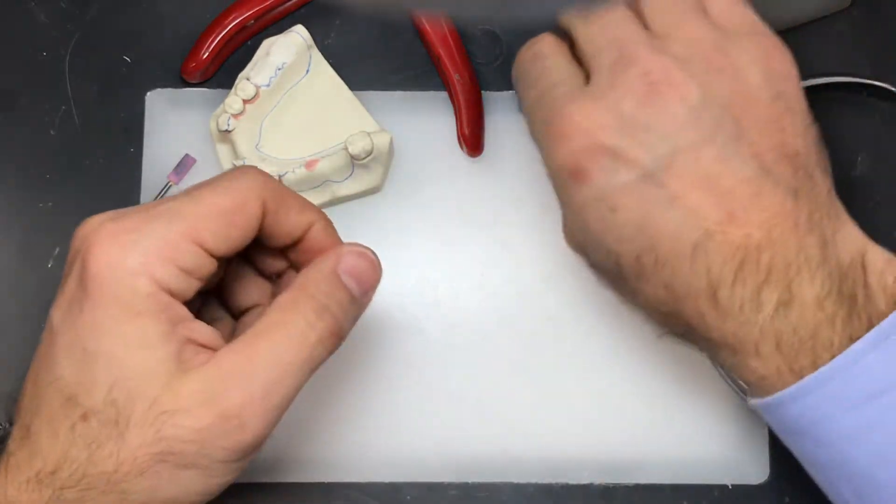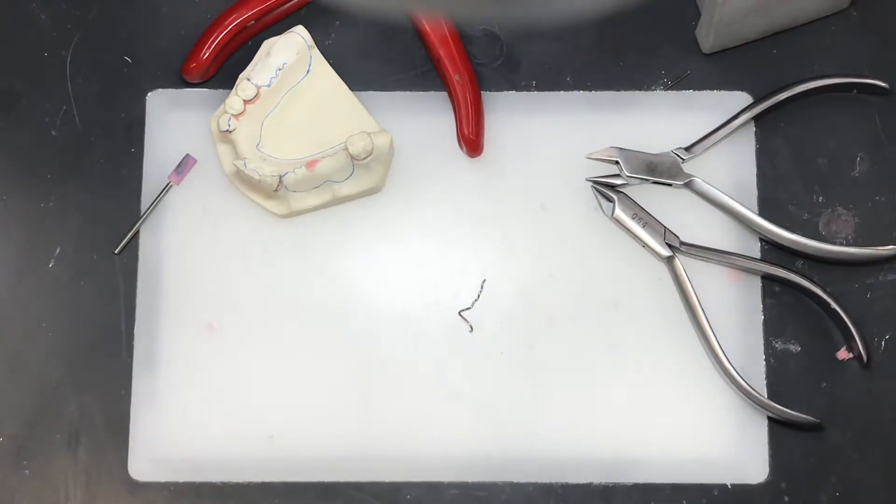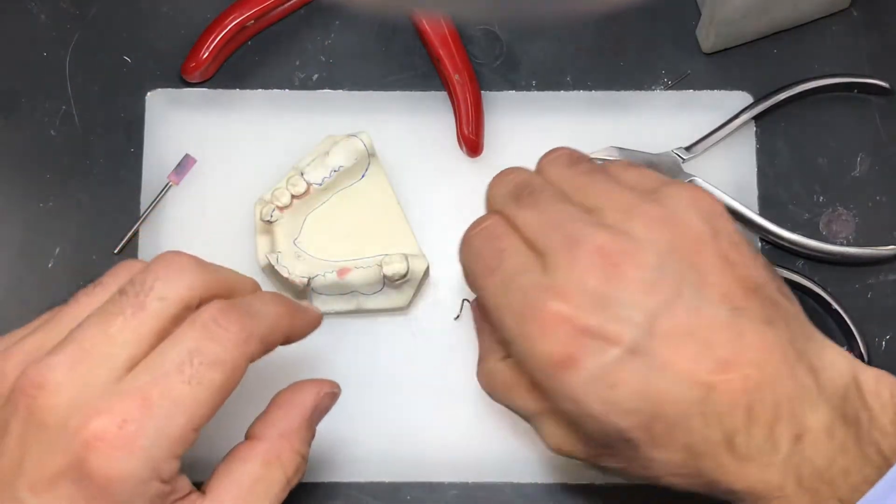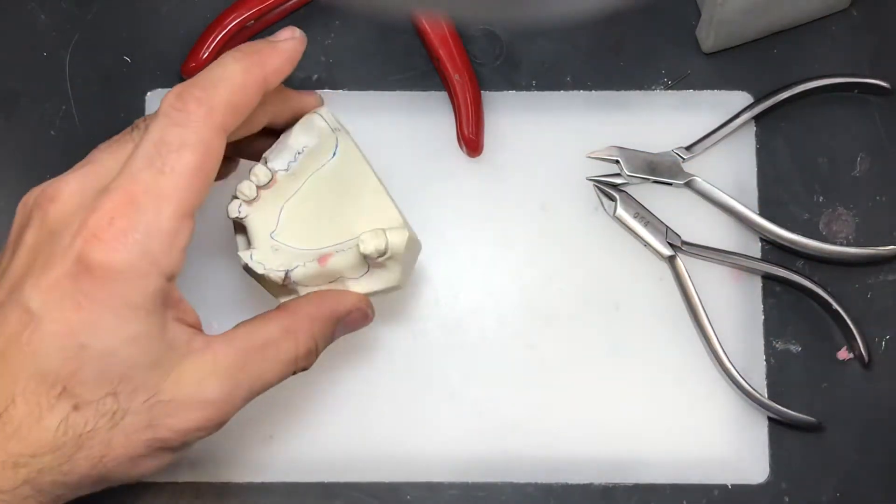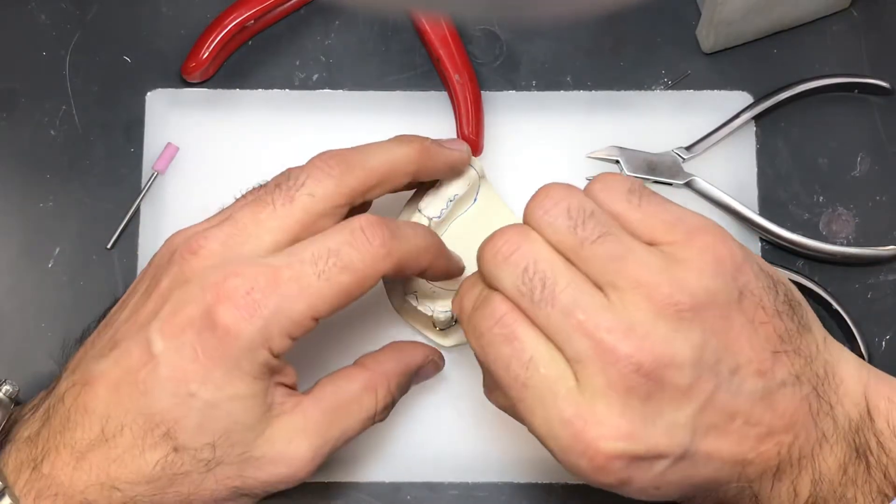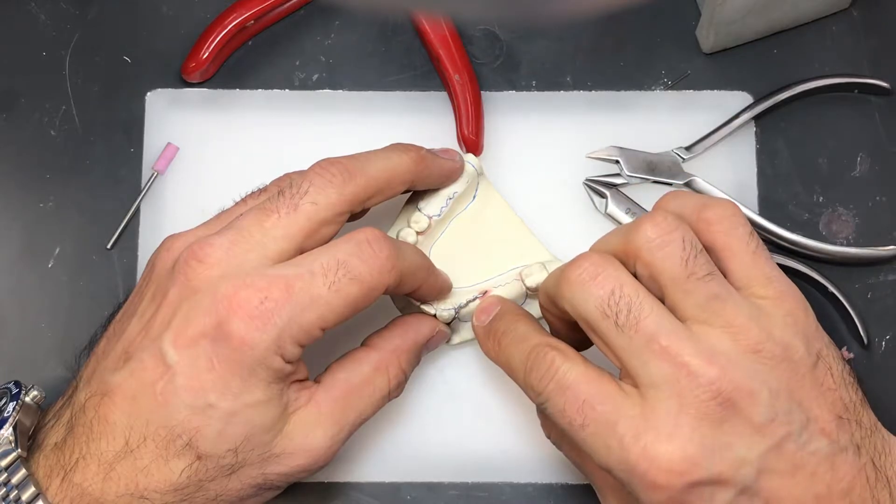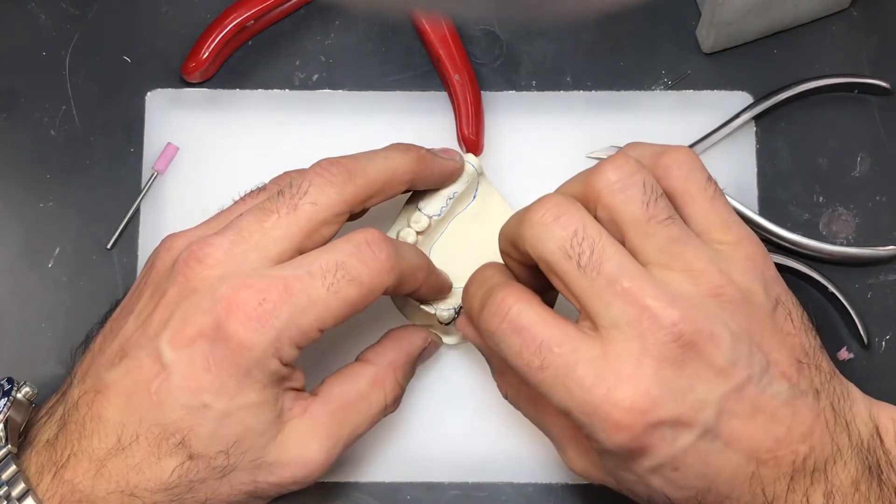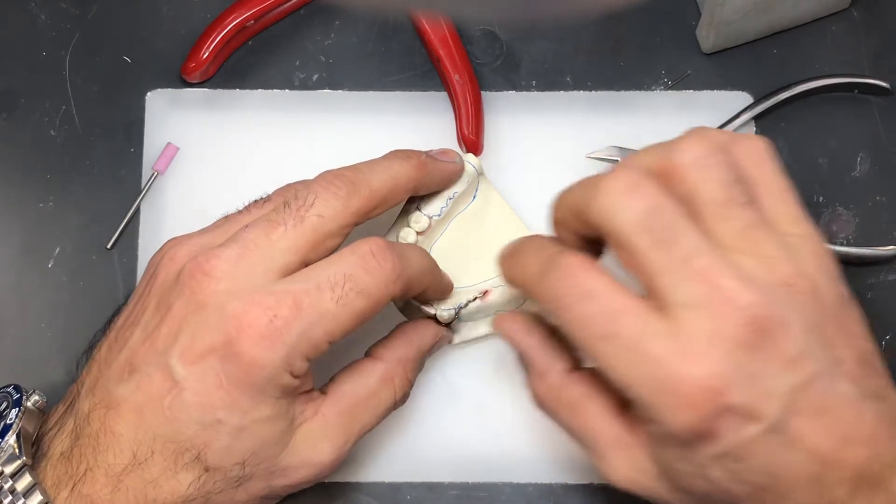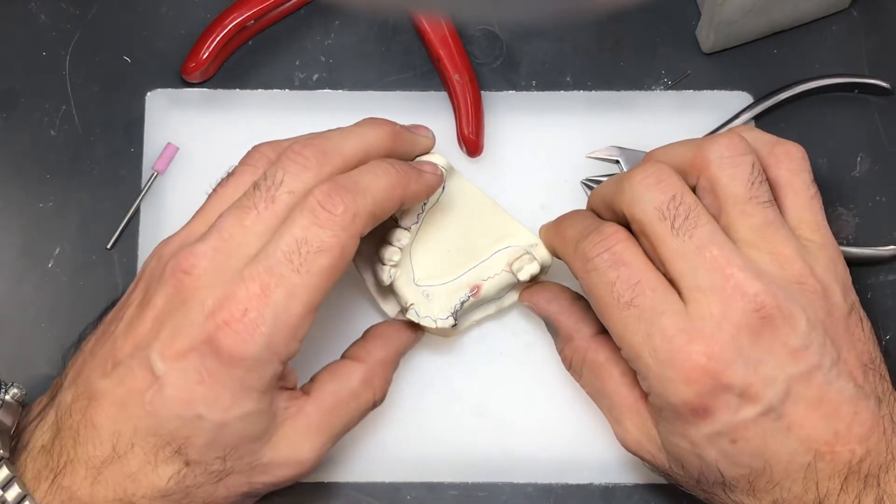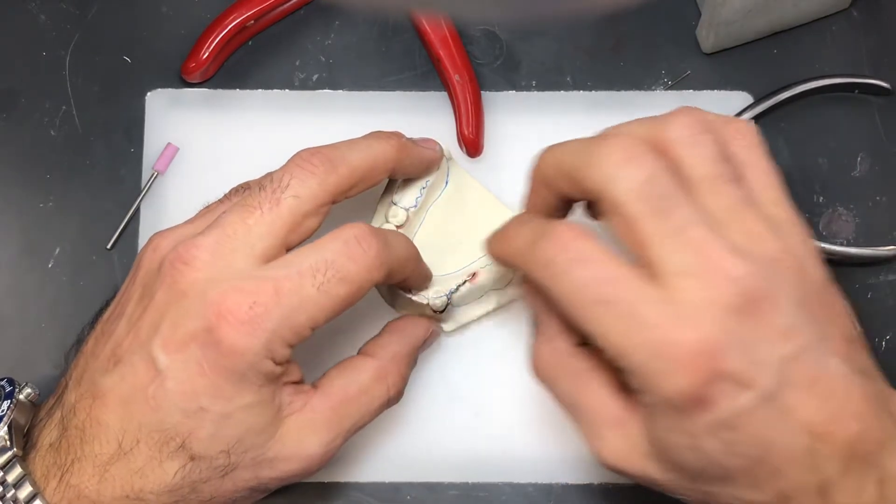Now I'm going to take this wire, place it back onto the cast and see how everything looks again. I'm going to use that little wax to make sure to reposition the wire back to where it was.